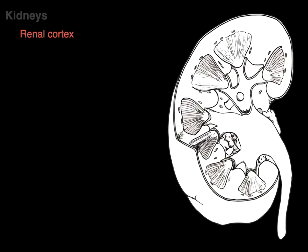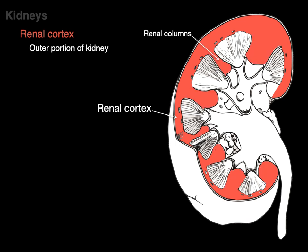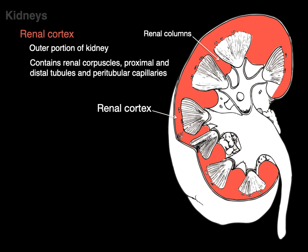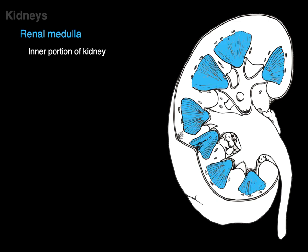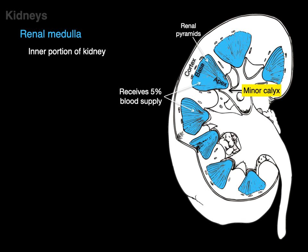The renal cortex is the outer portion of the kidney, including the renal columns that go between the renal pyramids. It contains renal corpuscles, the proximal and distal tubules, and peritubular capillaries, and receives 95% of the blood supply entering the kidneys. The renal medulla is the inner portion, comprised of renal pyramids with a base near the cortex and an apex that dumps into the minor calyx. The renal pyramids only get 5% of the blood supply, meaning a drop in blood pressure can cause ischemic damage.